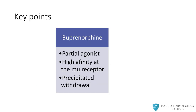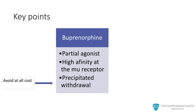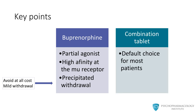To summarize key points: buprenorphine is a partial agonist with a high affinity at the mu receptor, leading to the possibility of precipitated withdrawal if opioids are still on the opioid receptors. This precipitated withdrawal is the most concerning adverse effect of buprenorphine treatment and should be avoided at all costs. The best way to do this is to ensure that patients are already in mild opioid withdrawal. The combination tablet containing both buprenorphine and naloxone is the default choice for the vast majority of opioid-addicted patients.